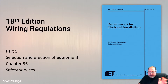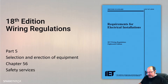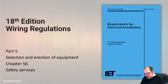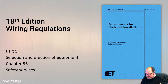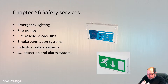Let's get Part 5 done - Chapter 56, Safety Services. Chapter 560 covers general requirements for safety services, selection and direction of electrical supply systems for safety services and electrical safety sources. Stable electrical supply systems are outside of the scope. The chapter covers emergency lighting systems, fire pump systems, fire and rescue lifts.